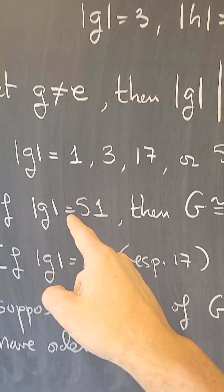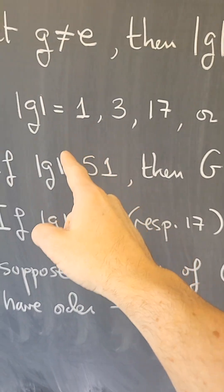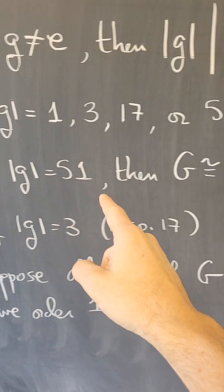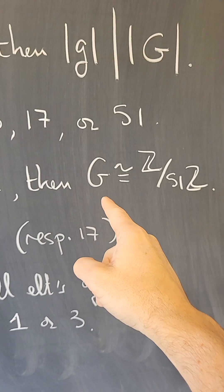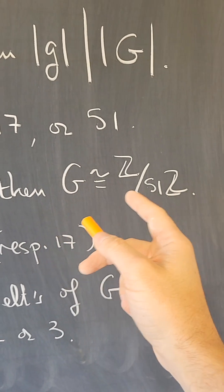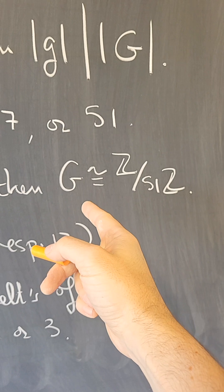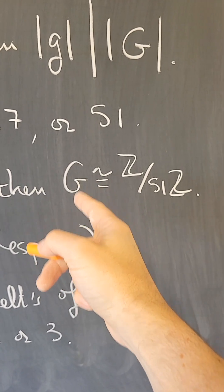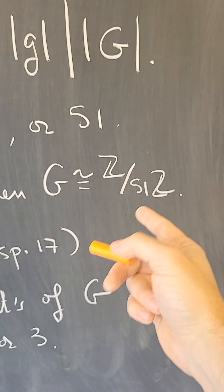Now if the order of g is 51, then the subgroup generated by g has 51 elements just like G, so it generates all of G, and we know that a group that is of order 51 and cyclic is isomorphic to Z modulo 51.